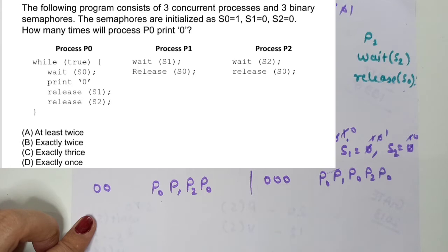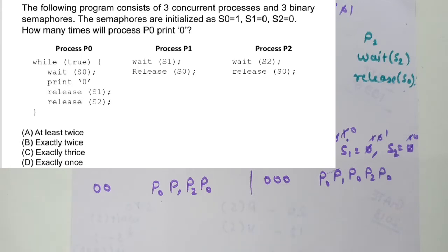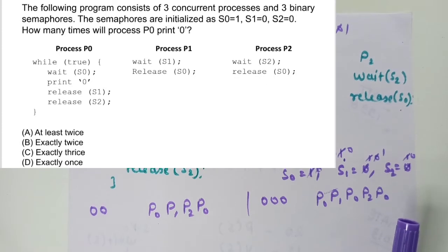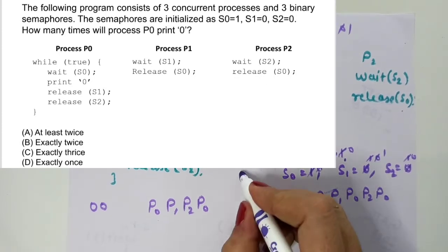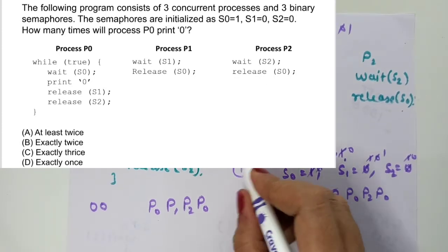After seeing these two orders and checking the options — exactly twice (no), exactly thrice (yes, we showed 3 times), and at least twice (covers both 2 and 3). So option A is correct: at least twice. This GATE 2010 question has been solved.